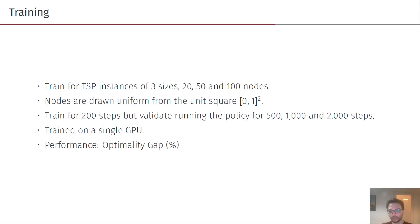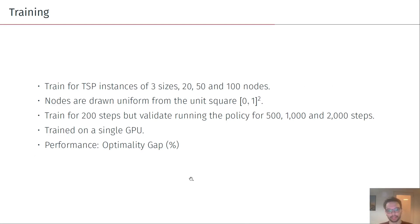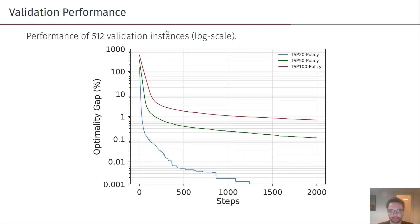In terms of results, we train for TSP instances of three sizes: 20, 50, and 100 nodes, drawn uniformly from the unit square. We initially train for 200 steps, but when we validate we run the policy for a longer period, and we measure performance by looking at the optimality gap — how far we are from the optimal solution. We can see that for all three policies we are able to improve over time, and for TSP with 20 nodes we find the optimal solution after sampling 1000 steps.